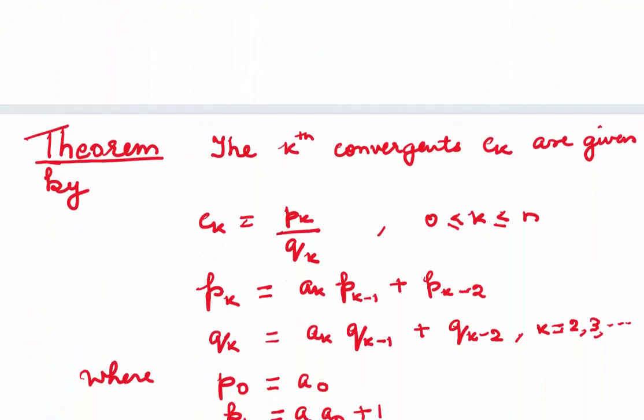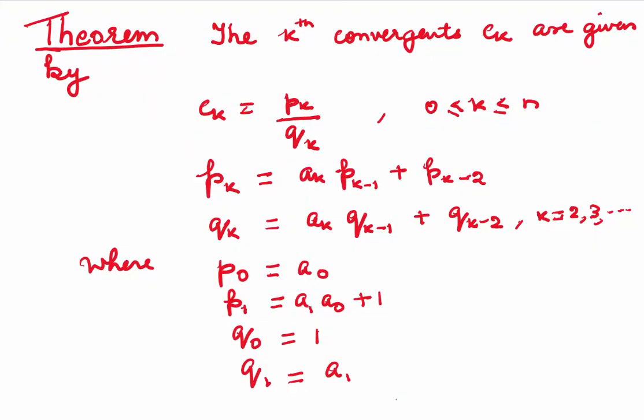Now, let us look at a theorem. The kth convergent Ck is given by Ck = Pk/Qk, where 0 ≤ k ≤ n. How do we find Pk and Qk? Pk = ak·P(k-1) + P(k-2), and Qk = ak·Q(k-1) + Q(k-2). But this is only for k values 2, 3, 4, and so on.